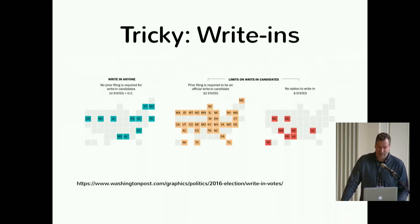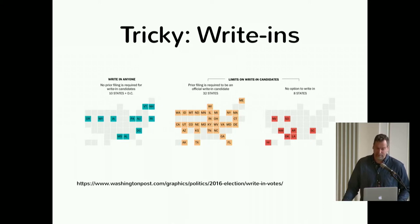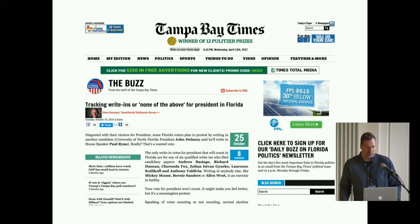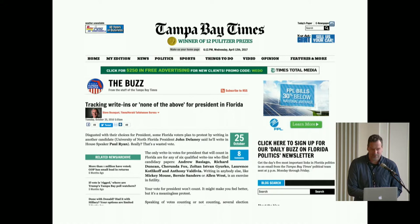Write-ins are really tricky because it changes from state to state. You have states where every write-in is a valid vote — basically someone can win the vote if enough people write them in. Then you have the ones who have to be official write-ins. And then you have other states where you can't have any write-ins, only official candidates. So in Florida, for example, you really needed to know which ones are the official write-ins — if you would vote for them, they would count. And if you would take Bernie Sanders, that would be an invalid vote. So we have to differentiate when we count that write-in either in the valid or in the residual vote.